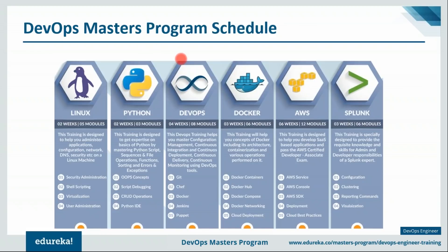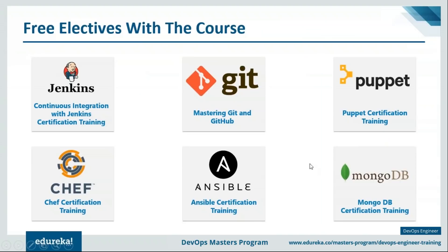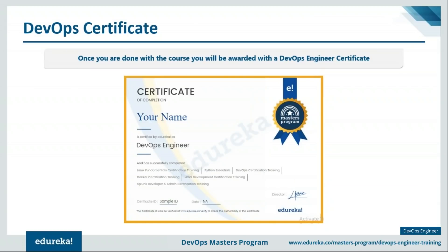The program schedule includes courses on Linux fundamentals, Python scripting, and a DevOps certification training with hands-on experience covering version control, containers, integration, testing, configuration management, containerization, deployment, and delivery. There's also a separate course on Docker, a course on AWS, and a course on Splunk. Free electives include Jenkins certification training, mastering Git and GitHub, Puppet, Chef, Ansible, and MongoDB certification training. Upon completion you will be awarded a DevOps engineer certificate uploadable to LinkedIn.